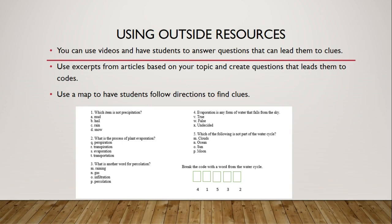You can also use outside resources — use videos and have students answer questions that lead them to clues. For example, have a student watch a video or read an article, then answer multiple choice questions. Their answers go into boxes, and it's your choice whether you want to put the boxes in order or not. If you want them to have the code, you can put it in order. Again, this is based on what you feel the difficulty level should be.